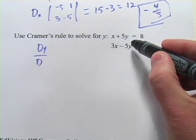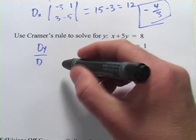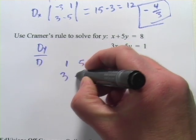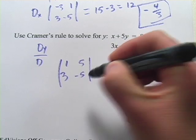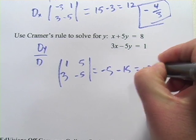Remember, that's the determinant of our coefficient matrix. So we've got 1, 5, 3, negative 5. So that's a negative 5 minus 15. That's a negative 20.